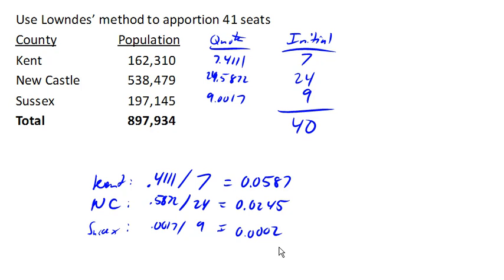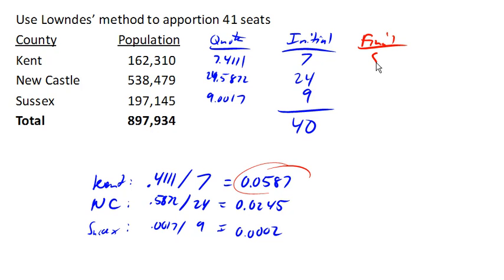To decide who gets the extra representative, we look at these values and pick the county with the largest one. In this case, Kent is going to get that extra seat. You notice there's been a sort of bias in this method towards the smaller counties.